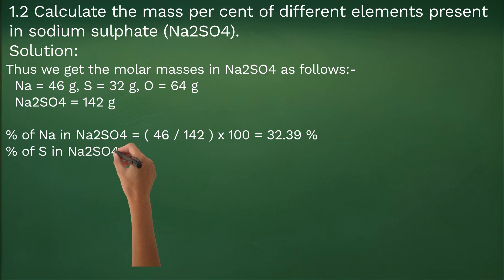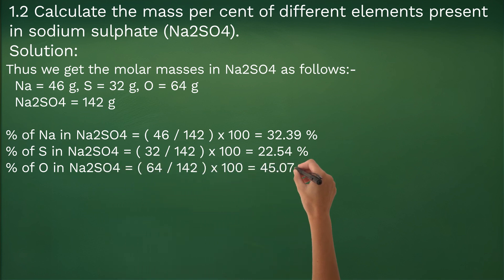Percentage of sulfur is 32 divided by 142 times 100 equal to 22.54 percent, and of oxygen it is 64 divided by 142 times 100 equal to 45.07 percent.